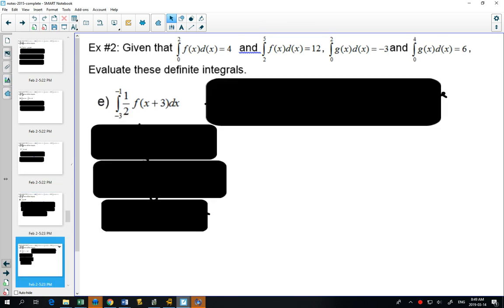The fifth one uses the properties, and it uses your knowledge of transformations. What does f of x plus 3 mean? From our transformations, 3 to the left.